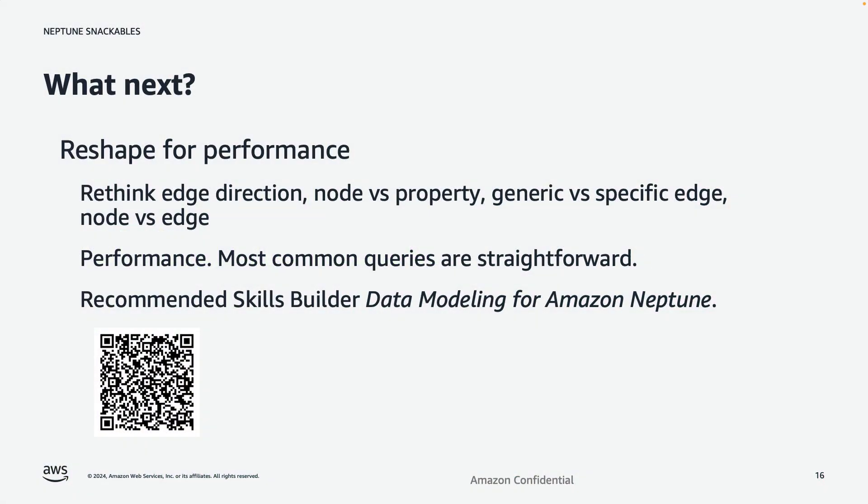After you've had this initial win with the easy model, as the development process progresses you need to evolve the model by adding detail and potentially reshaping it. There are all sorts of modeling considerations for performance in a graph — such as edge direction, whether something should be a node or property, generic versus specific edges, and whether something should be a node or edge. These are important considerations you may not have addressed in the easy stage. We have an excellent Skills Builder course, 'Data Modeling for Amazon Neptune,' that walks you through these considerations.